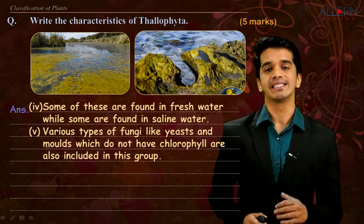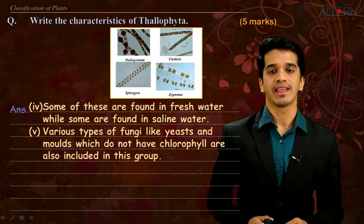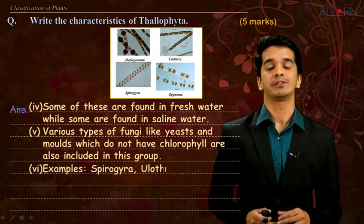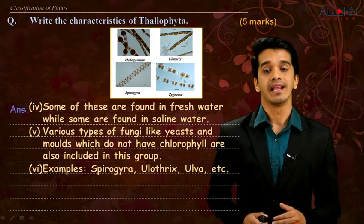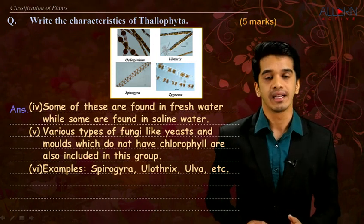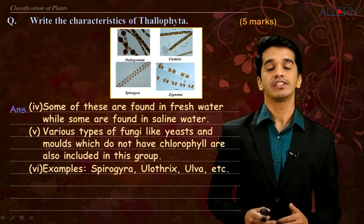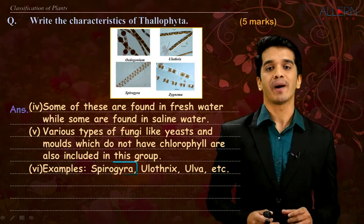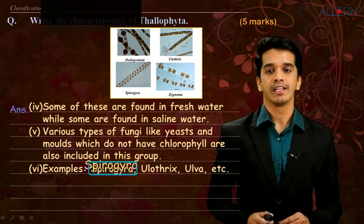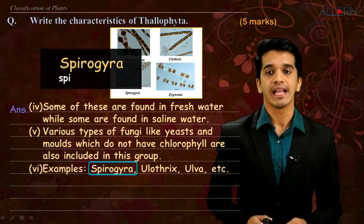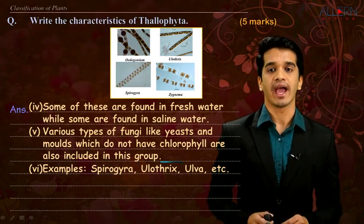Now let us see the examples of thallophyta. The first example is Spirogyra, the second example is Ulothrix, and the third example is Ulva. The spelling of Spirogyra is S-P-I-R-O-G-Y-R-A, and Ulothrix is U-L-O-T-H-R-I-X.